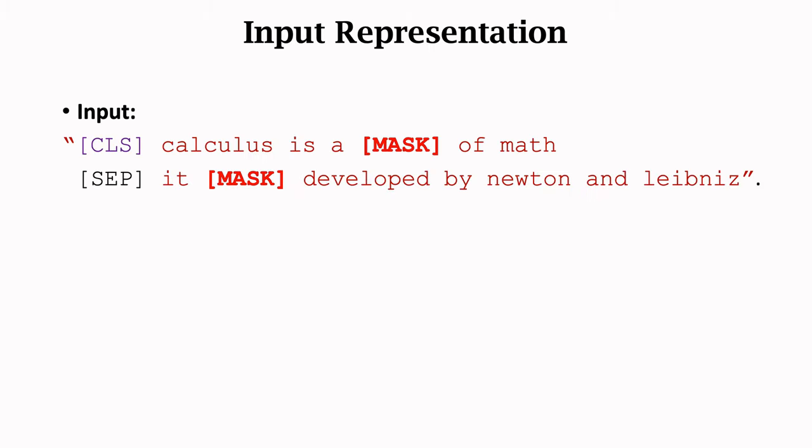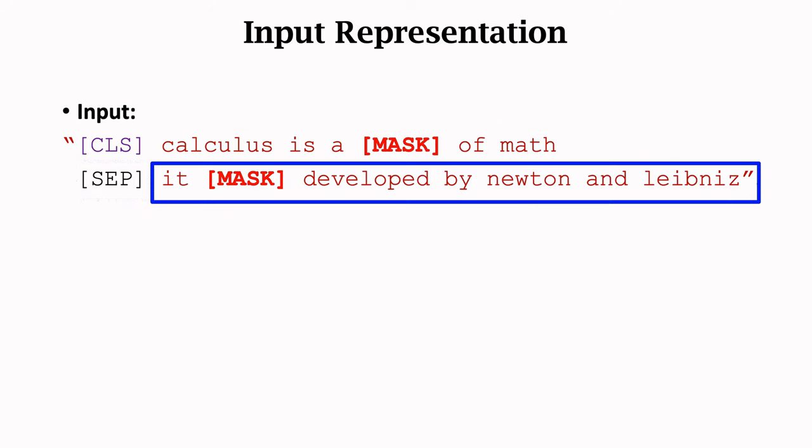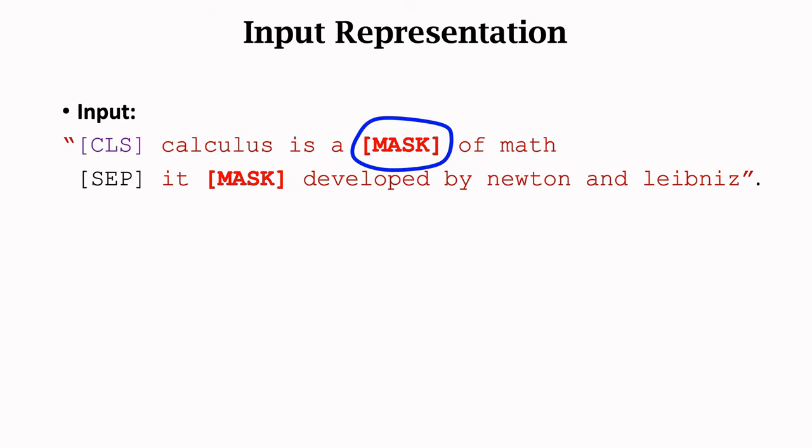We have discussed two tasks for pre-training transformer. First, predict the masked words. Second, decide if two sentences are actually neighbors. Next, let's combine the two tasks. We organize two sentences in the same way: the CLS token, the first sentence, the SEP token, and the second sentence. In addition, 15% of the words are randomly masked. In this example, two randomly selected words are masked.